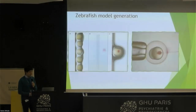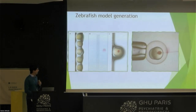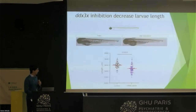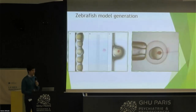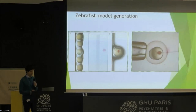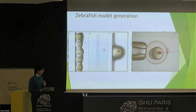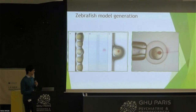We modify these fish by injecting them at the first stage when they have only one cell. In this case, we are knocking down the gene using CRISPR-Cas9, which breaks the DNA sequence and induces changes that produce the breakdown of the gene.